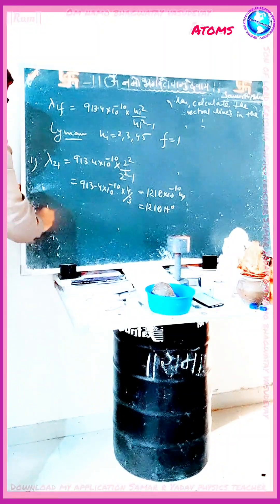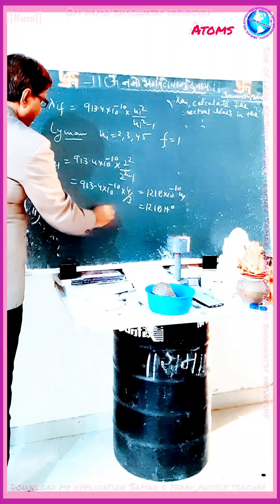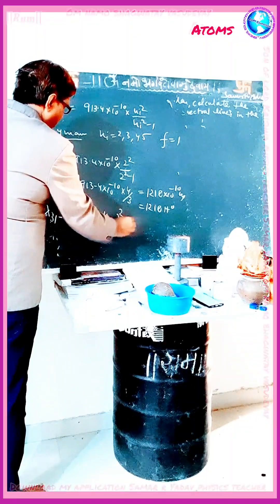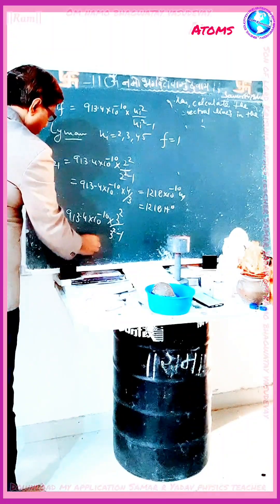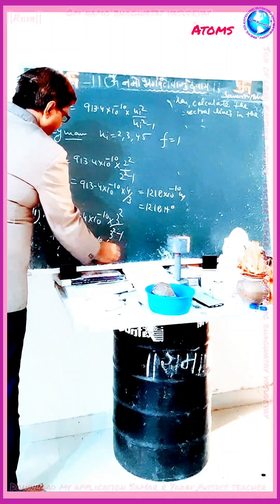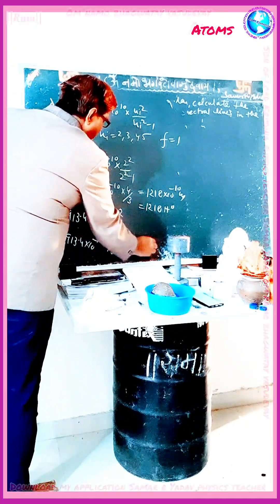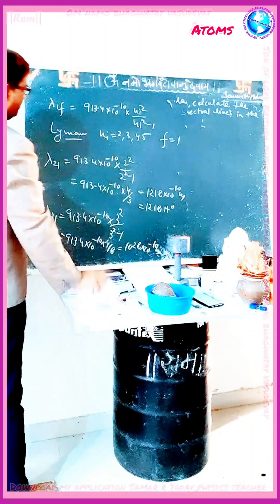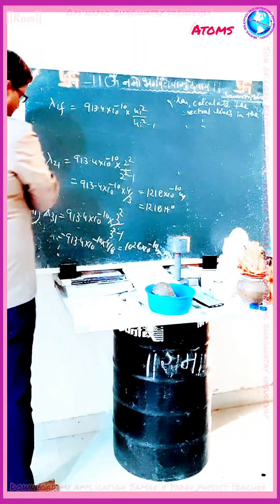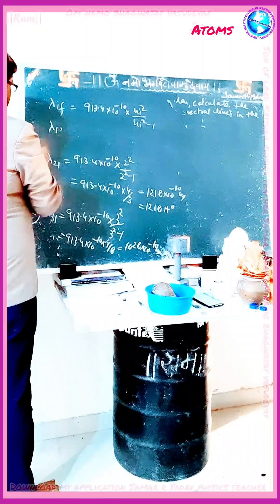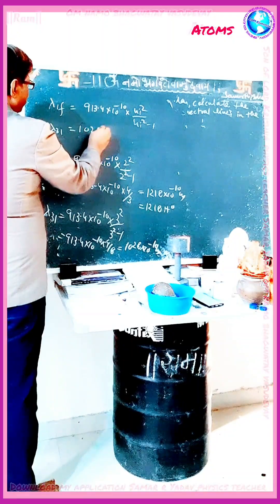For the second line, λ₃₁ is equal to 913.4 × 10⁻¹⁰ into 3² upon (3² minus 1), that is 913.4 × 10⁻¹⁰ into 9 upon 8. Solving this, we get 1028 × 10⁻¹⁰ meters, or 1028 Angstroms.